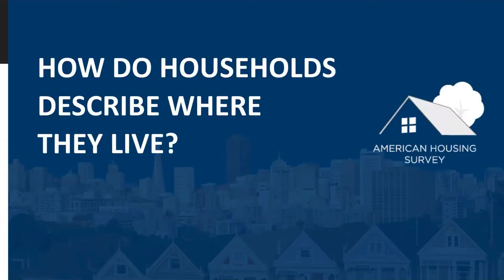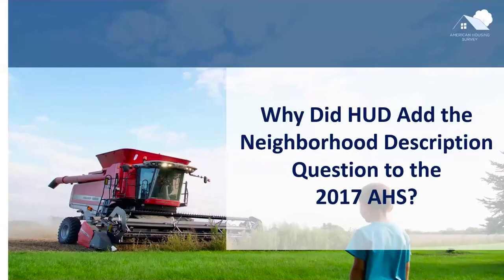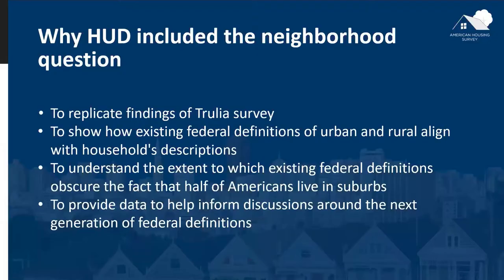For today's topic — how do households describe where they live — in 2017, HUD added a neighborhood description question to the American Housing Survey asking respondents whether they would describe their neighborhood as urban, suburban, or rural. Before we explore the findings, it is important to understand HUD's motivations. HUD had four principal reasons. First, HUD wanted to replicate the main findings of a survey conducted by the real estate company Trulia, where they asked neighborhood description questions. HUD felt that Trulia's results were important. Second, HUD sought to provide empirical evidence showing how existing federal definitions of urban and rural align with people's description of their neighborhood. Definitions of urban and rural play an important role in how HUD and several other agencies within the federal government allocate tax dollars.